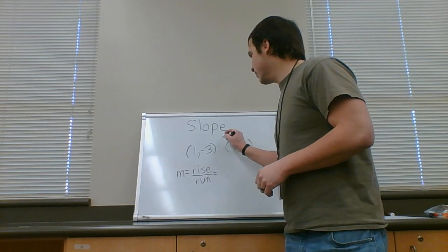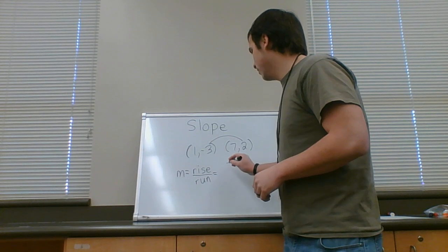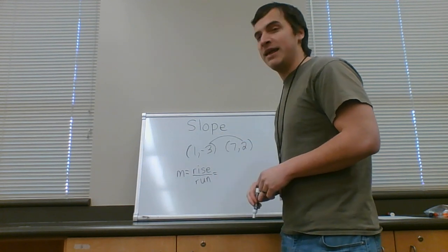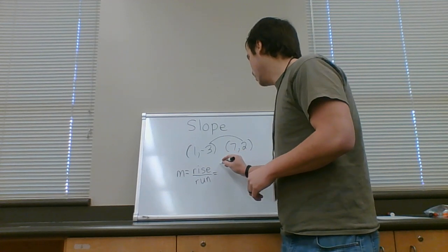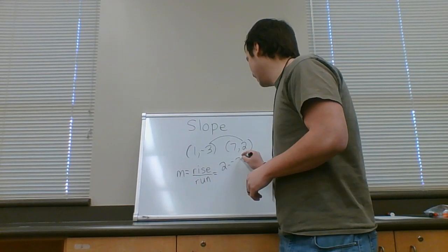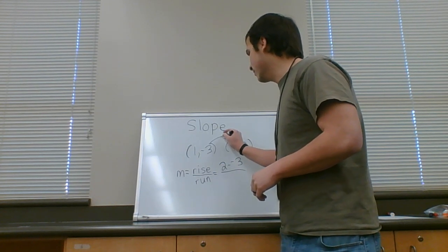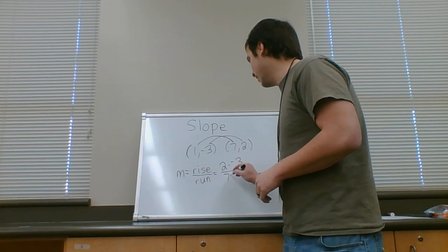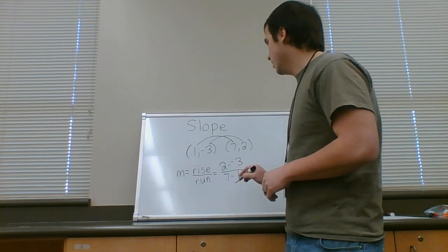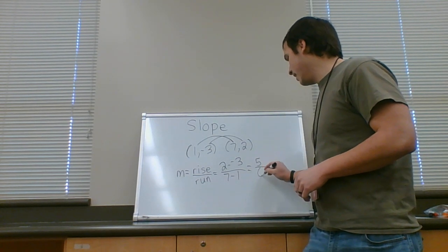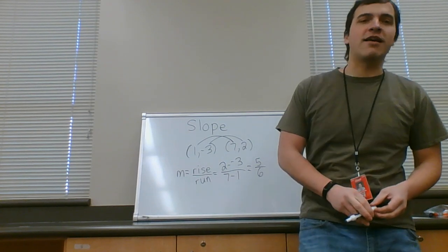the rise comes from subtracting the y values. So I'm going to do this way to this way right now. You could also go the other way. It doesn't actually matter. Two minus negative three, and then the run is the difference in the x values. I'm going to do seven minus one. Two minus negative three is five. Seven minus one is six. Ta-da! That's your slope. Five over six.